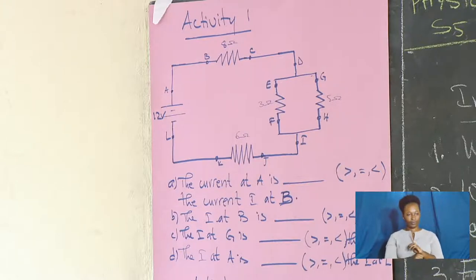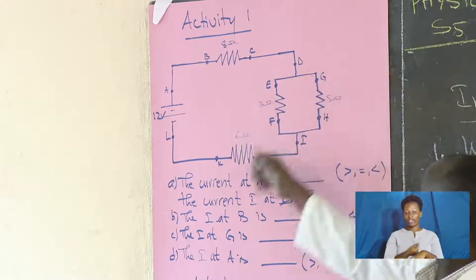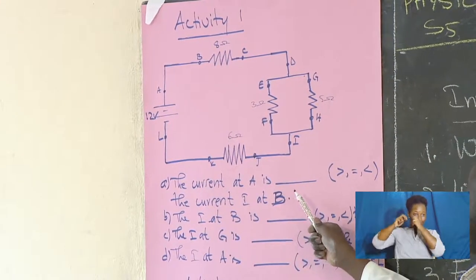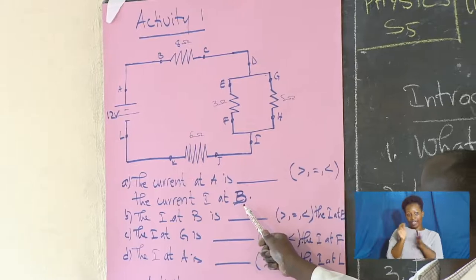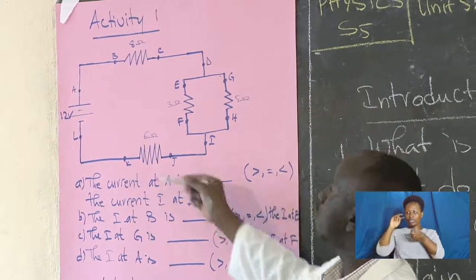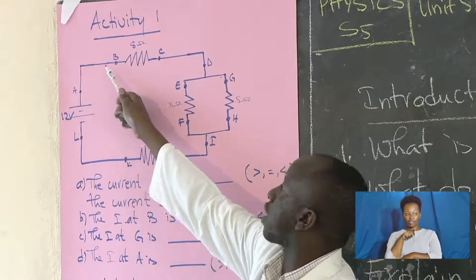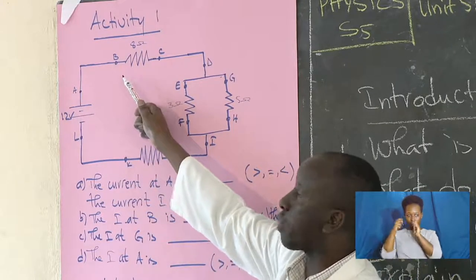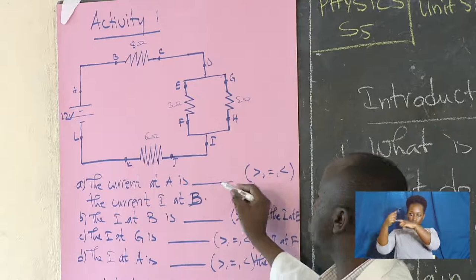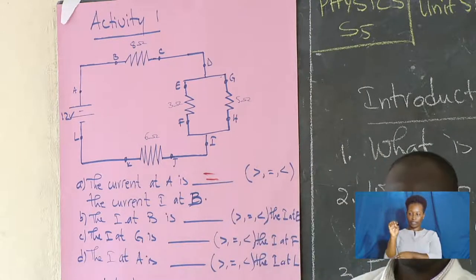We have to see the current from A and compare it to the one at B. The current doesn't go back — it continues to that resistor and goes out, so it is equal. The current at A equals the current at B.